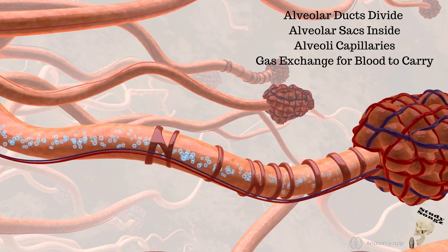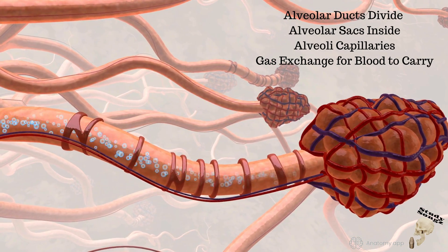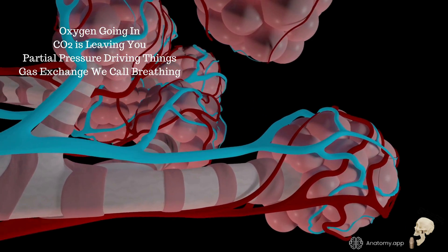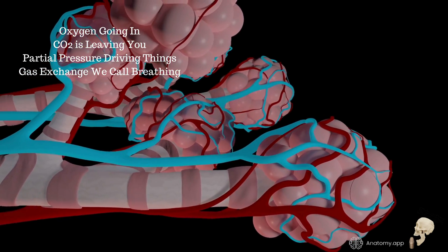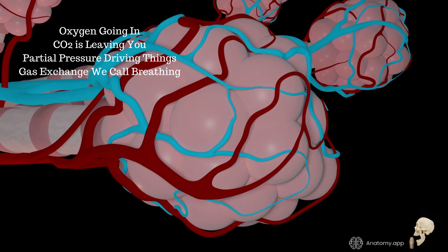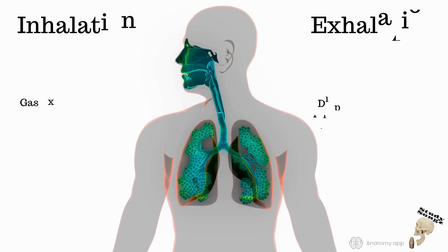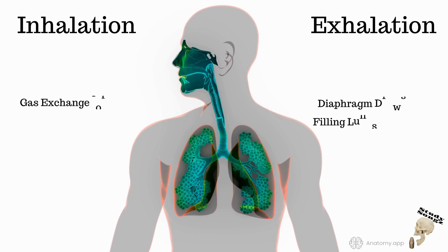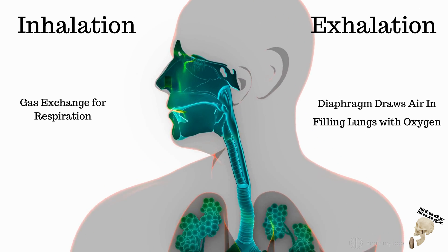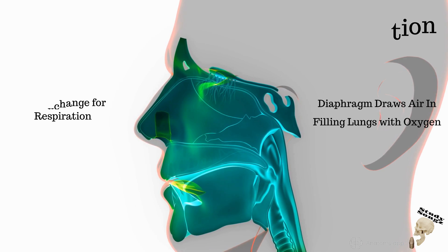Inside alveoli, capillaries — gas exchange — blood carries oxygen going in; CO2 is leaving. Partial pressures are driving things. Gas exchange, we call it breathing. Inhalation, exhalation, gas exchange for respiration. Diaphragm draws air in, filling lungs with oxygen.